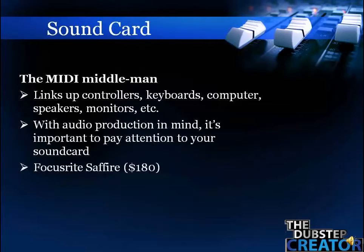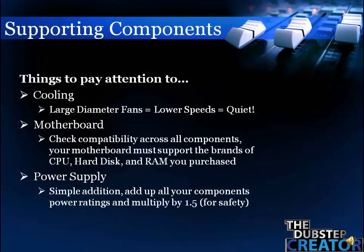With music production you definitely want to pay attention to your sound card and make sure you get a quality one. A sound card basically links up all of your equipment dealing with MIDI interface — everything from your controllers and keyboards to your computer and out to your speakers and monitors. A good one to start with is the Focusrite Sapphire at only 180 dollars, and it also comes with an internal graphics card so you don't have to buy one separately. The included graphics card should be fine as long as you're not gaming.